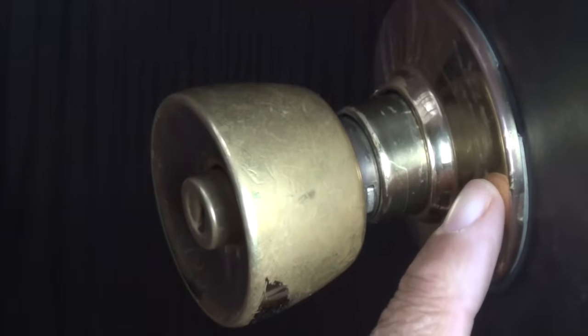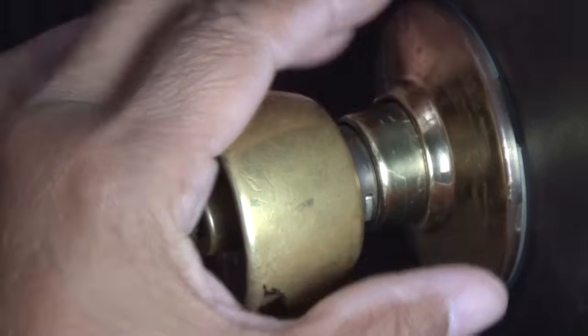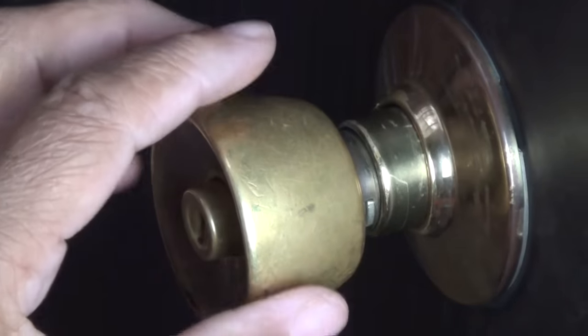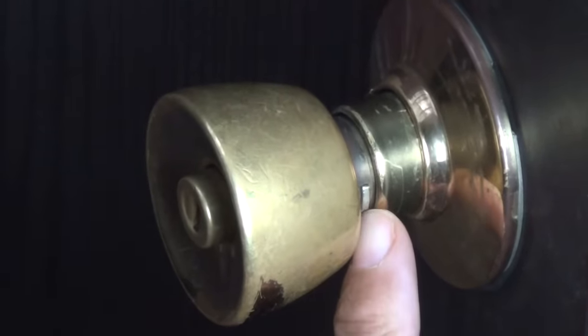The screws we have to access are behind this faceplate, and to get to the faceplate we need to remove the doorknob. The way that's done - there's a little tiny slot there.